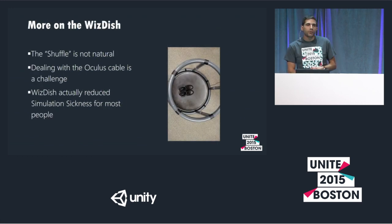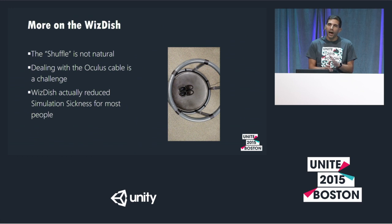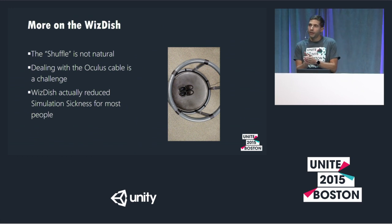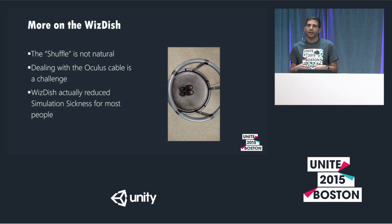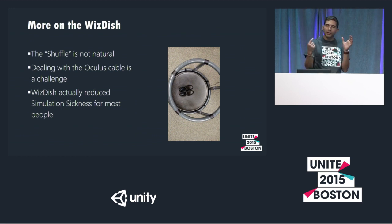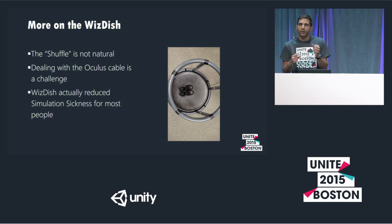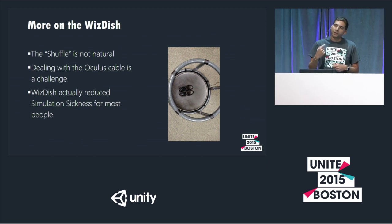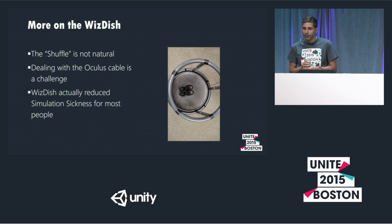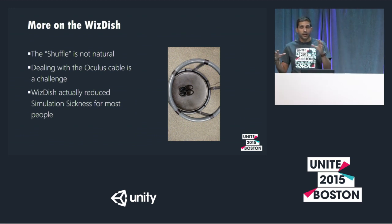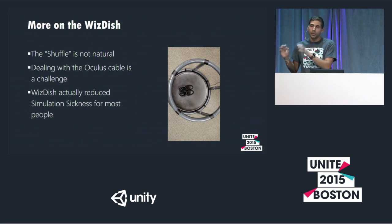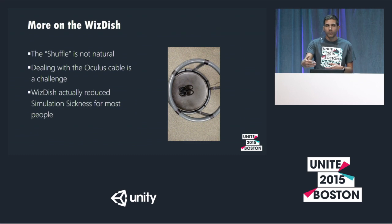With the WizDish you don't walk normally — you shuffle, keeping both feet on the ground. It's not natural but not exactly unnatural either — it's sort of like a forward-moving moonwalk. Because players move 360 degrees, dealing with the cable is a bit of a challenge and players can wrap themselves up in it. The good thing is it does reduce simulation sickness — people feel they're going forward once they're moving.